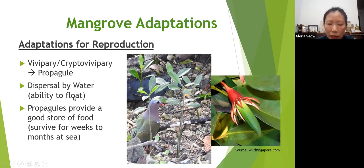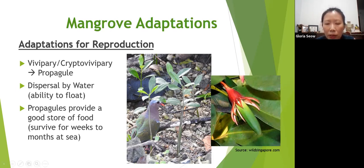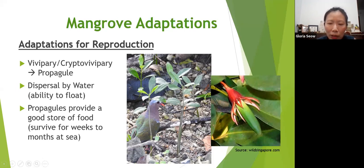The propagule is able to float in water and can disperse to other mangroves and newly formed mud to establish there. The propagules also provide a good store of food, so they can survive for weeks and months at sea. In this photograph you can see an emerald dove walking among young seedlings. The propagule is half exposed and half buried in mud, because the root tip absorbs water making it heavier, so it bends downward, establishes in the mud, and starts to sprout up.